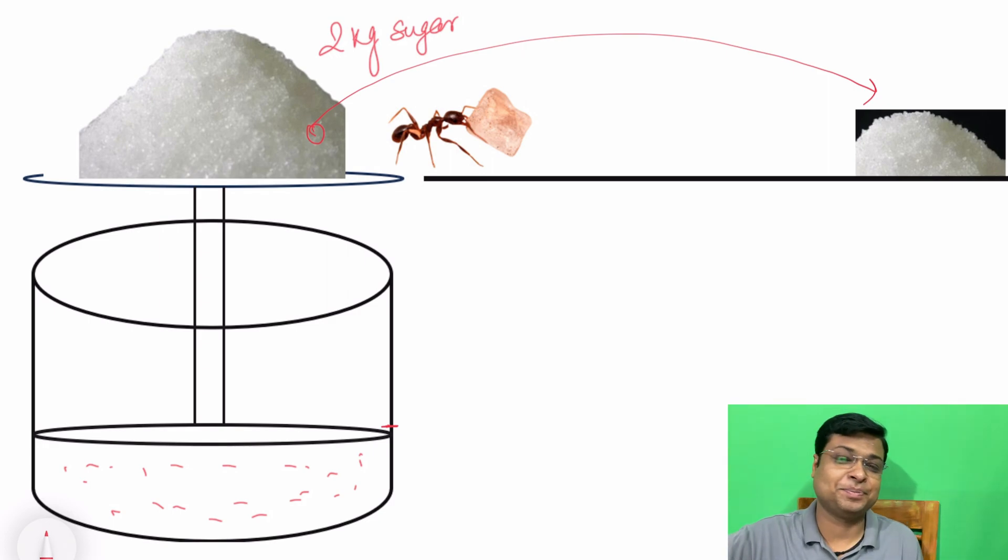Then ant again came and lifted second particle of sugar and again system reaches at this point. So in this way, one by one, ant lifts entire sugar from the piston and moves from this point to this point.